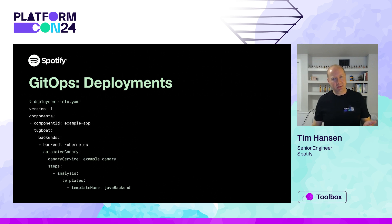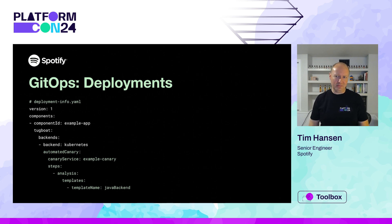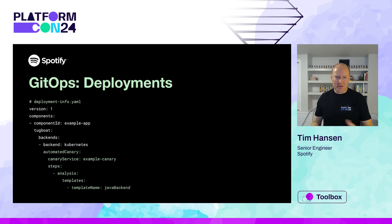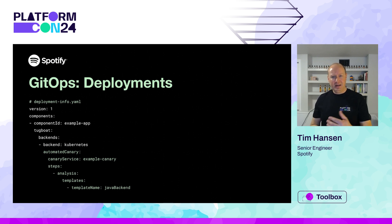One more thing on deployments: this declarative format allows us to build very powerful features and make them easy to express and add to a service. As an example, our deployment system can do automated canary deployments. This means for each code change, we stand up a new pod, shadow load some traffic onto it, and check metrics like error ratio to make sure the new pod is behaving before promoting the entire deployment. You can see how easy this is to add to your service — just a few lines of YAML. And as a result, lots of services do use it. We can even create the PR for you.